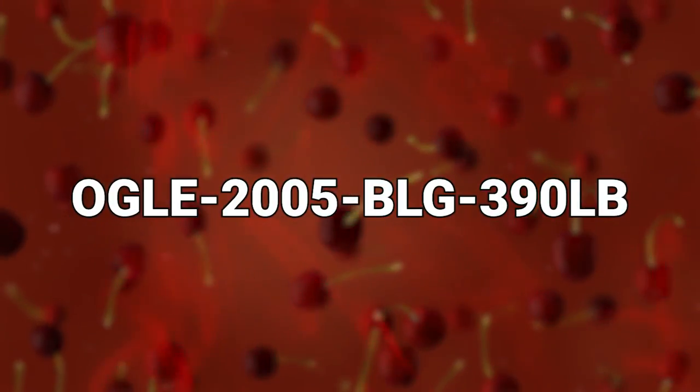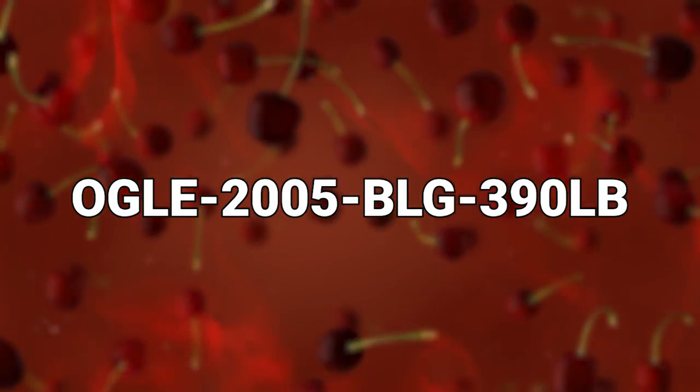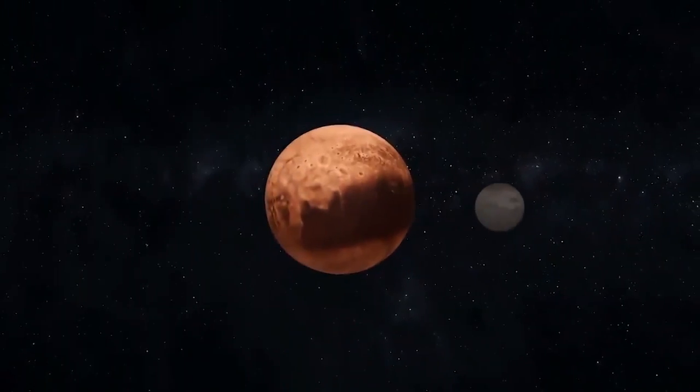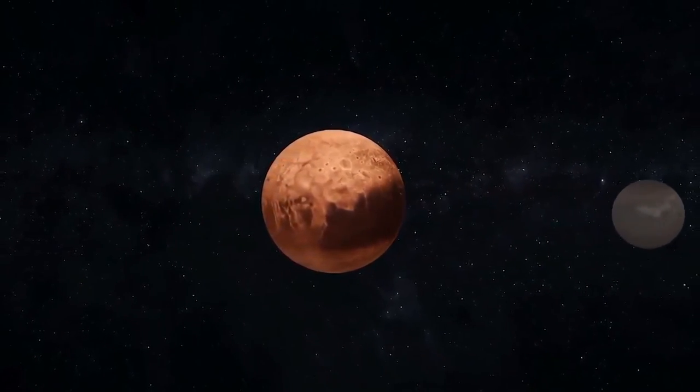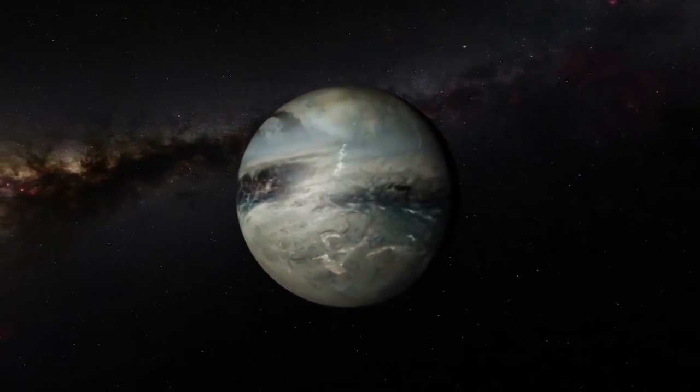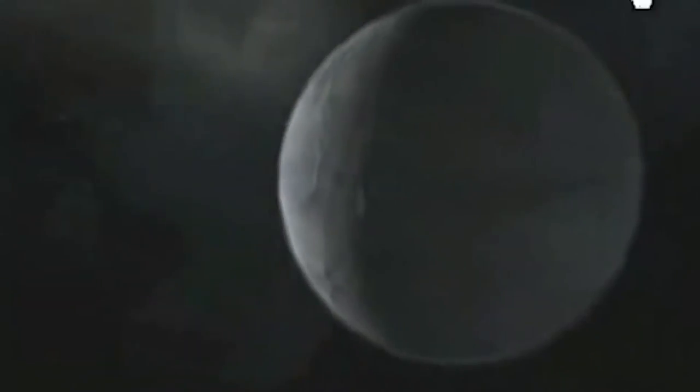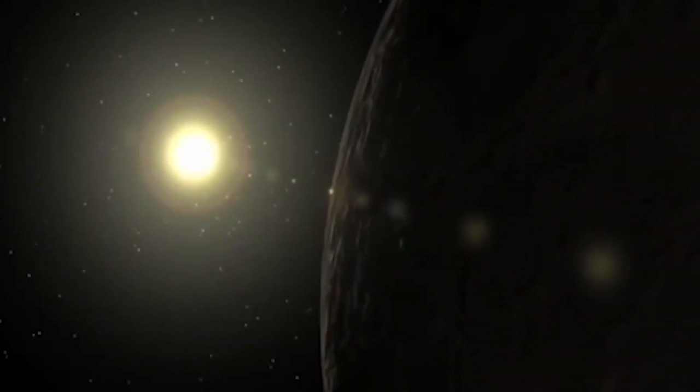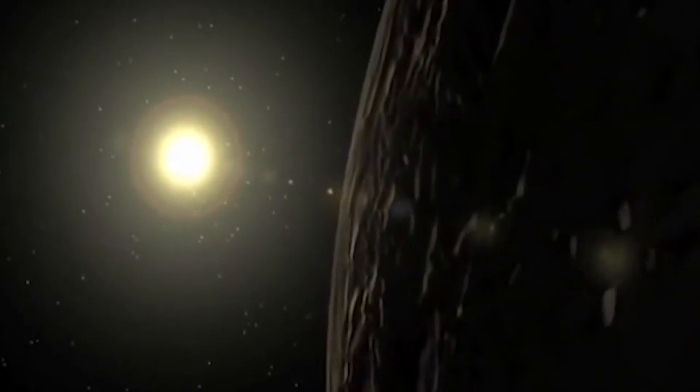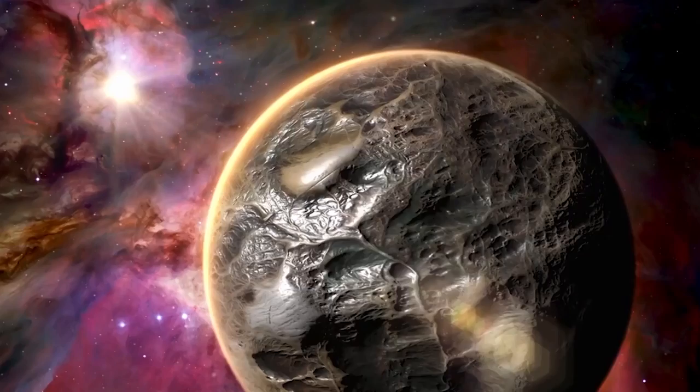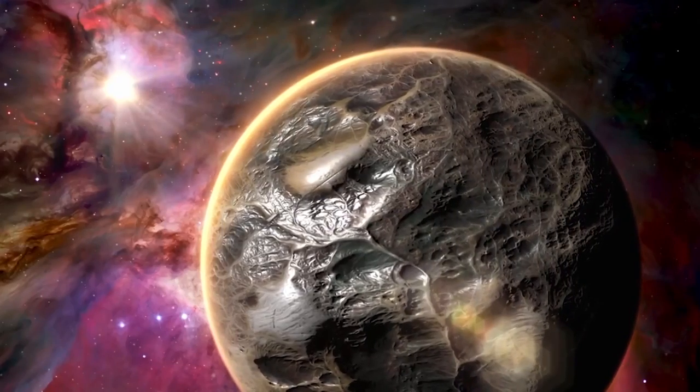Number 11: Ogle 2005 BLG 390LB. Yes, I know, that's a really long and really, really dumb name. But the good news for you is that this planet also happens to be one with a nickname, and it's one that you may just be familiar with, because they call it Hoth. Yes, that's right, as in the ice planet from The Empire Strikes Back in Star Wars. The planet is estimated to be about 5 times the Earth's mass, making it a very large icy planet.